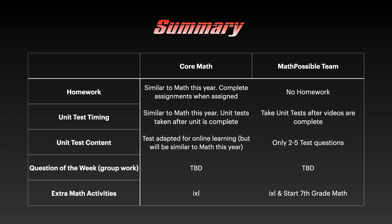The unit test contents are only about 2 to 5 questions long for the Math Possible team. For the core math team, it's going to be adapted but definitely online. Everyone will be part of the question of the week — date still to be decided. For extra math activities, both groups will have IXL. But because you are fast tracking, you're going to move on to 7th grade math after you finish 6th grade.